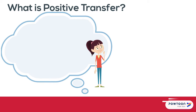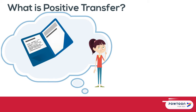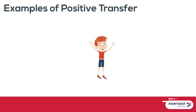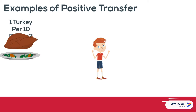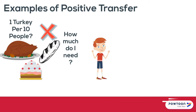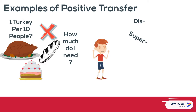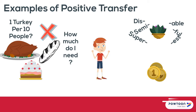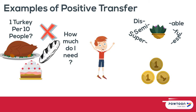Positive transfer is when we retrieve information from the past and apply it successfully in new learning. For example, planning a dinner — you use math to increase or decrease ingredients in a recipe. Understanding prefixes and suffixes can help in decoding new words. Purchasing items in one currency versus another is again a use of math skills.